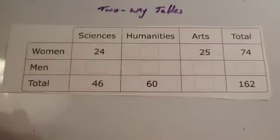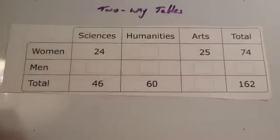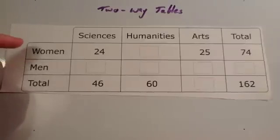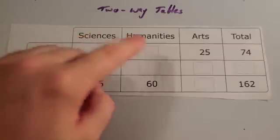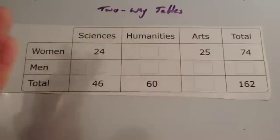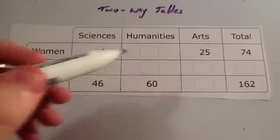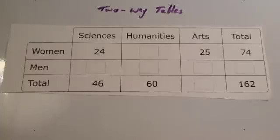We're now going to look at two-way tables. Two-way tables are used to represent two different types of information. Here you can see we have the gender and we also have subjects studied. The typical question will give you a two-way table with some missing numbers that you have to work out. You can use the information they give you to work out the missing numbers.